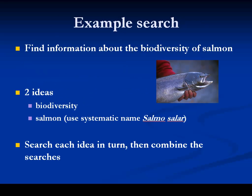My example search will be finding information about the biodiversity of salmon. So there are two ideas here: the biodiversity idea and salmon. When you're searching for a species in Biosis you use the systematic name, so I'll use Salmo salar. I'll search each idea in turn and then combine the searches.